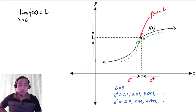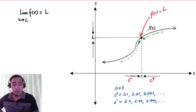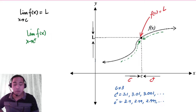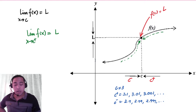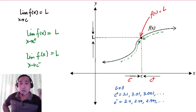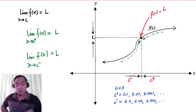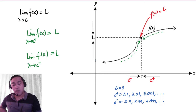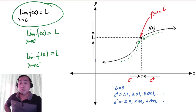Because it has been said that the limit of f of x as x approaches C from the right is equal to L, and the limit of f of x as x approaches C from the left is equal to L. Since the right-hand side limit and the left-hand side limit are both equal to L, then the general limit — the limit of f of x as x approaches C — is equal to L.